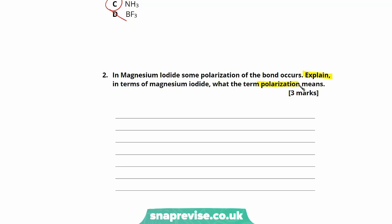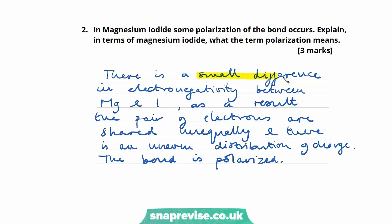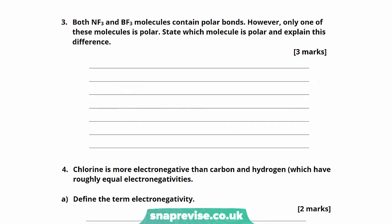Part two: in magnesium iodide, some polarization of the bond occurs - explain what the term polarization means in terms of magnesium iodide. This question holds three marks. The answer is: there is a small difference in electronegativity between the magnesium and the iodine; as a result, the pair of electrons are shared unequally; and there is an uneven distribution of charge, and therefore the bond is polarized.